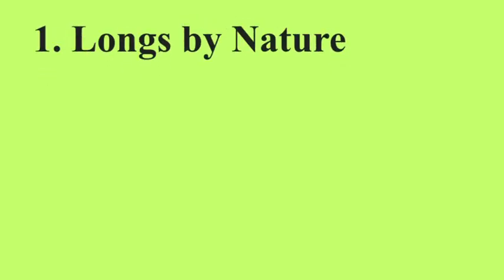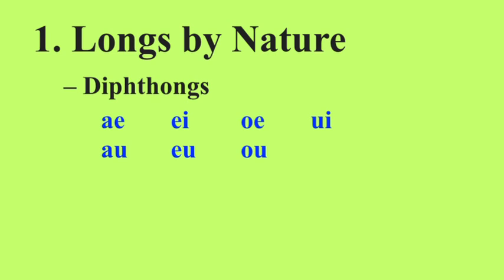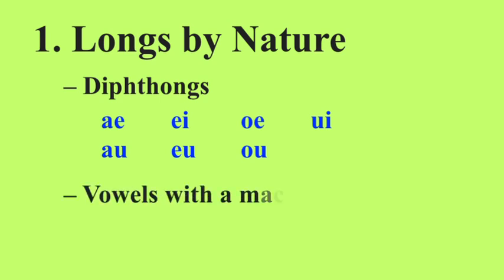Luckily, we have several rules that we can follow. First off are what are called longs by nature — syllables that are naturally long. Diphthongs, two vowels that together are pronounced as one vowel sound, are naturally long. The other longs by nature are vowels that you would find a macron over — for instance, the A in the first declension ablative singular, in 'mensa', is long. There are many more long marks in endings and in regular words. If you happen to notice that the accusative plural ending always has a long vowel, keep that in mind.